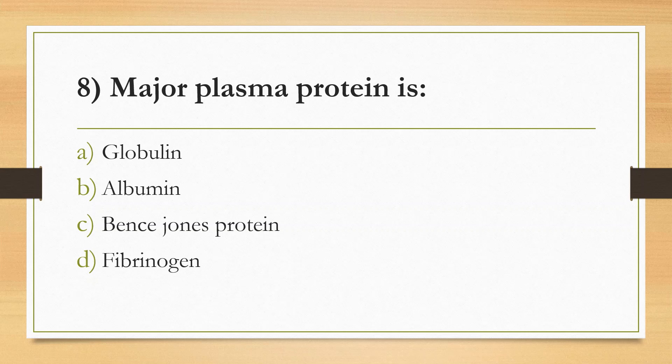Eighth Question: Major plasma protein — Option A: Globulin, Option B: Albumin, Option C: Bence Jones Protein, Option D: Fibrinogen. Answer is Option B: Albumin. Albumin is the major plasma protein; the second most abundant is Globulin. Albumin functions to maintain osmotic pressure, bind and transport various molecules in blood, and has antioxidant and anti-inflammatory action.